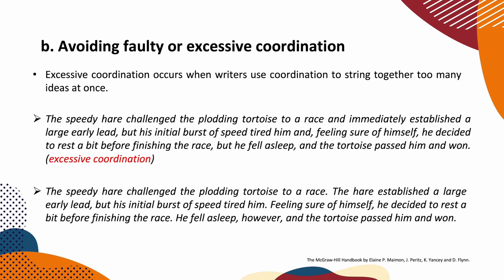Here is the revised version: 'The speedy hare challenged the plotting tortoise to a race. The hare established a large early lead, but his initial burst of speed tired him. Feeling sure of himself, he decided to rest a bit before finishing the race. He fell asleep; however, the tortoise passed him and won.' The little story is complete without repeating so many coordinating conjunctions.